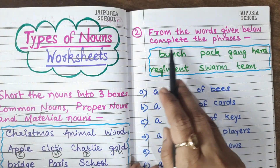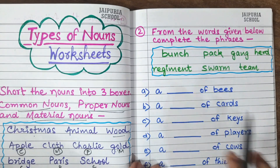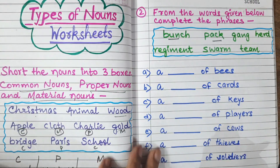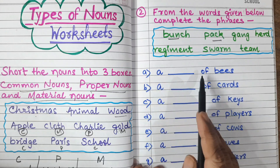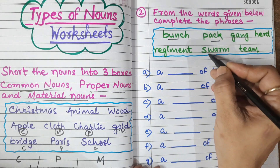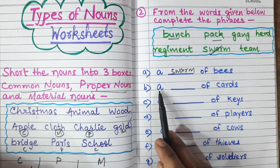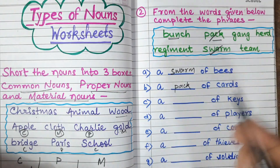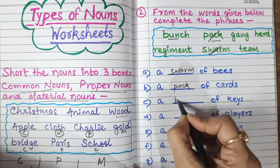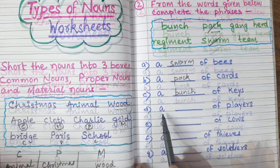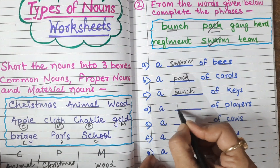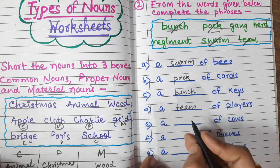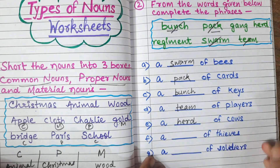Now, from the words given below, complete the phrases. A bunch of keys. A team of players. A herd of cows.